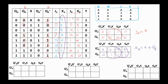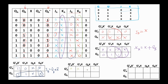Next, JB: the K-map entries are 1, 0, X, X, 1, 1, X, X. So JB equals QA or not X. Next, for KB: the entries are X, X, 1, 0, X, X, 1, 0. So KB equals not X.